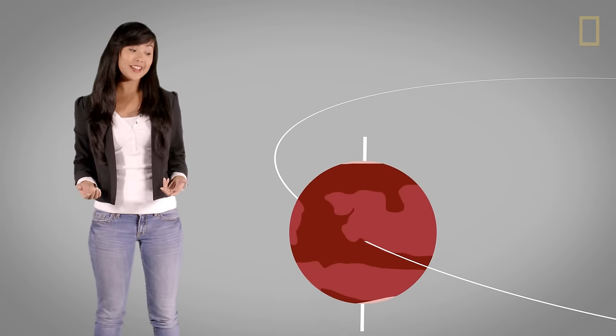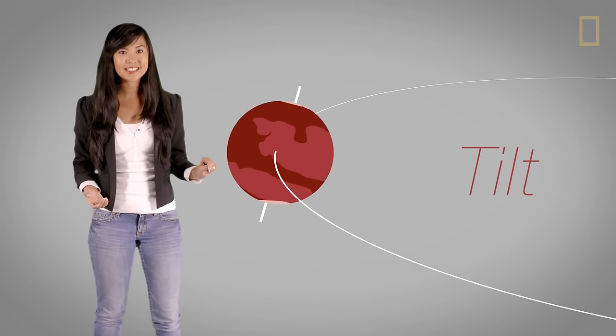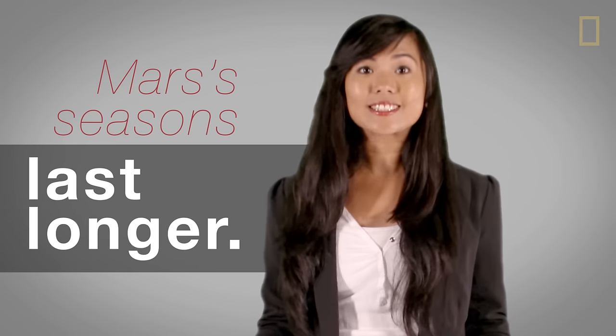While orbiting the Sun, much like Earth, Mars has a tilt in its axis. This means Mars gets seasons like we do, but due to its elliptical orbit, some of its seasons last longer.